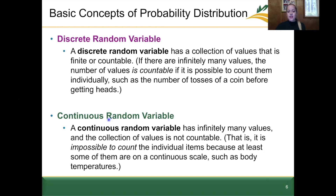For a continuous random variable, it has infinitely many values and the collection of values is not countable. In other words, it's impossible to count the individual items because at least some of them are on a continuous scale, such as body temperatures, for example, which can range across continuous decimal values.